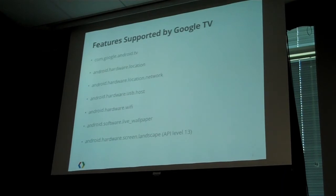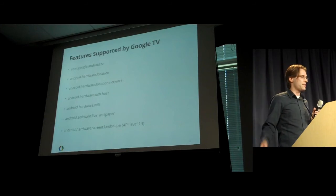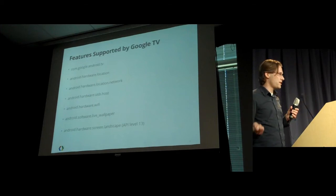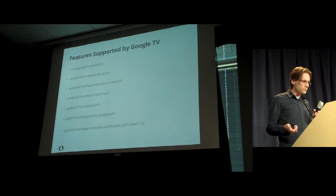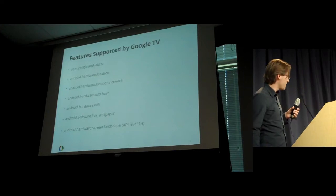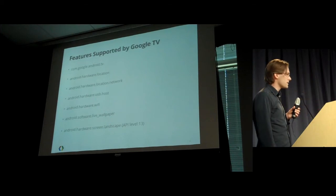Hardware location and hardware location network are for getting the location of the user — you can use a location manager to find out where the user is, at least at the zip code level. USB host is one of my favorites — Google TV allows users to plug in mass storage devices or USB HID devices to control it. You can actually write your own drivers for USB accessories in Google TV via the USB host feature. We support Wi-Fi, live wallpapers, and there's one introduced in API level 13: landscape mode.